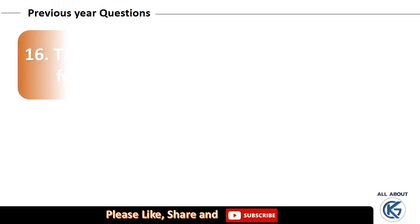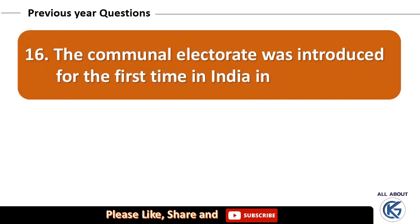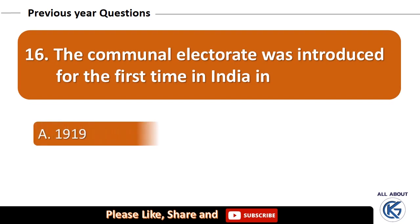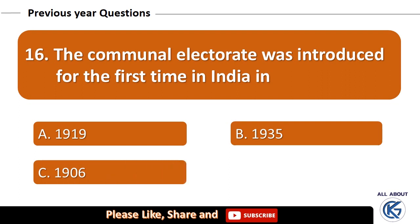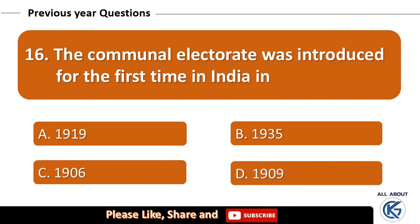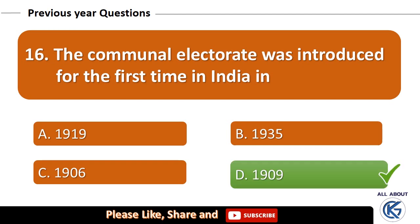The communal electorate was introduced for the first time in India in: 1919, 1935, 1906, or 1909? The right answer is 1909.